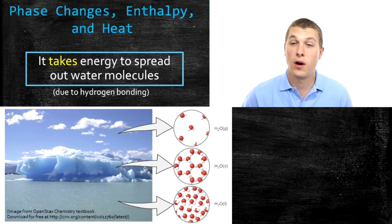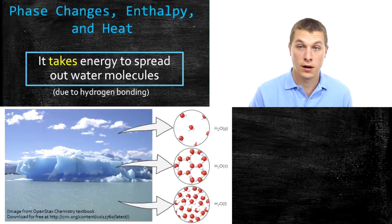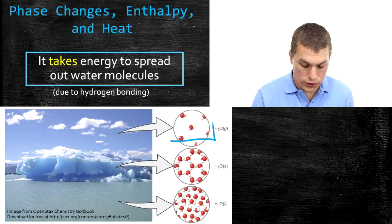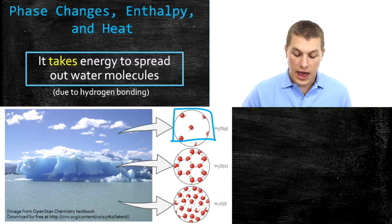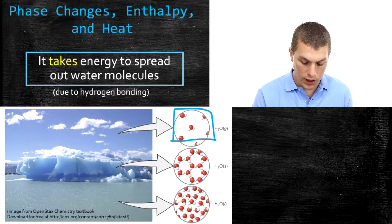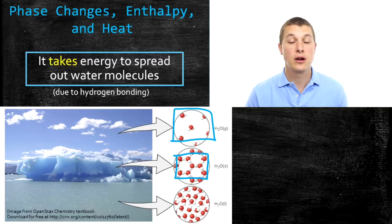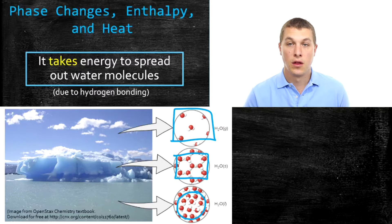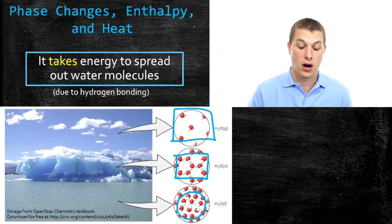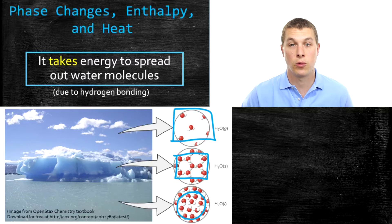If you look at the picture below, you see all three phases of water. Up in the clouds we have water vapor — water in the gas phase. Looking at those molecules, each red sphere represents an oxygen and the white spheres hydrogen. You can see those water molecules are very far apart. For solid water — ice — the water molecules are basically overlapping, in very tight contact. Liquid water is in between: the molecules are close together but not as close as in ice.